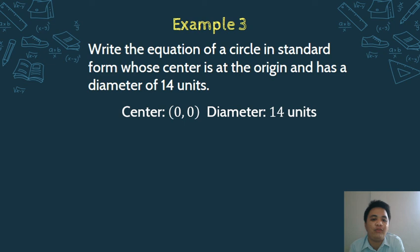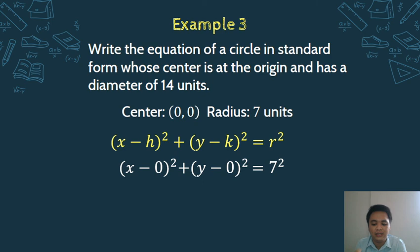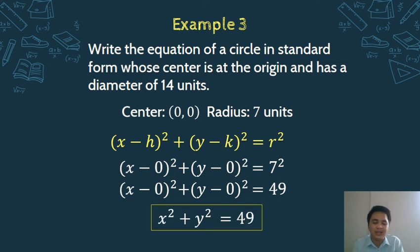Substitute: (x − 0)² + (y − 0)² = 7². Simplify the right side: 7 squared is 49, so (x − 0)² + (y − 0)² = 49. Simplify further: x − 0 is just x, and y − 0 is just y. So the equation becomes x² + y² = 49.